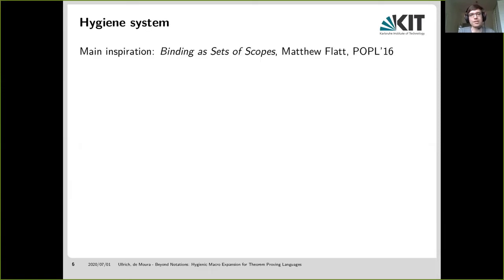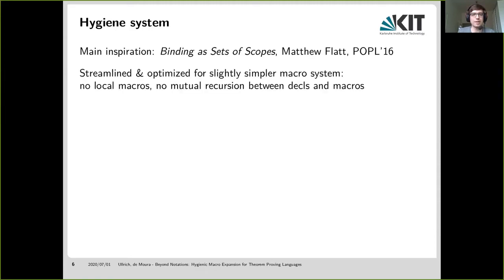So all in all, we can say that hygienic macros really mean that when they are expanded, they're introducing a fresh scope for all the identifiers inside introduced by this macro. And that is, of course, not a novel idea by us. Macro expansion has long been researched in the Lisp community. And our main inspiration for our approach is the Racket expander as described in the paper binding as sets of scopes. I won't explain the original algorithm here because we did actually apply quite a few changes to it. But of course, we discussed it in the related work of our paper.